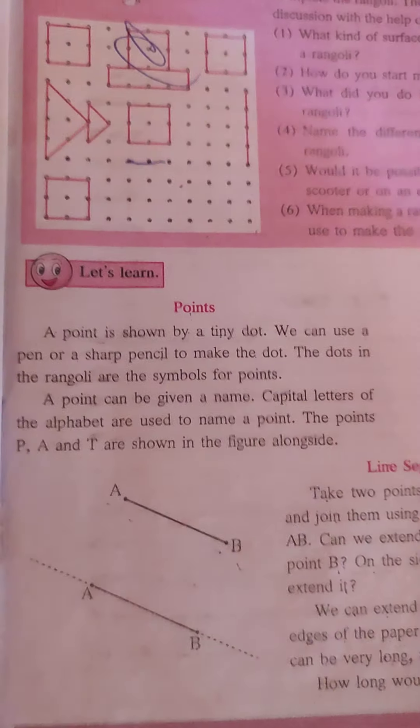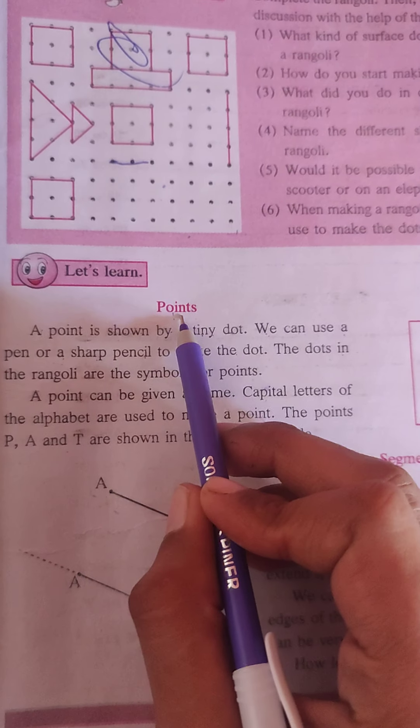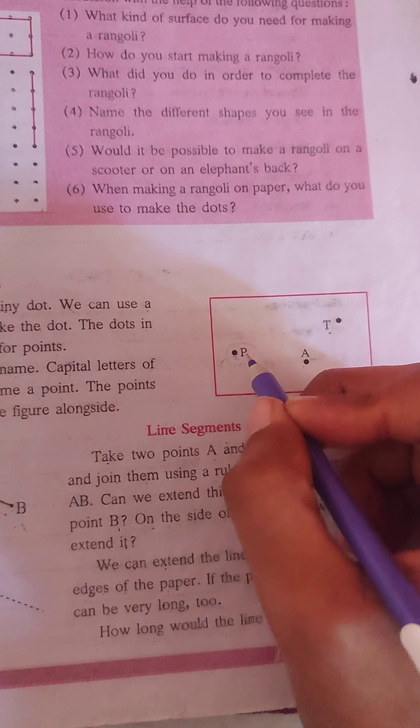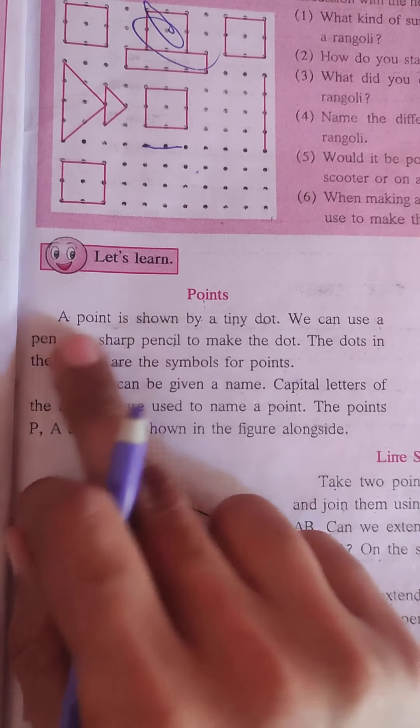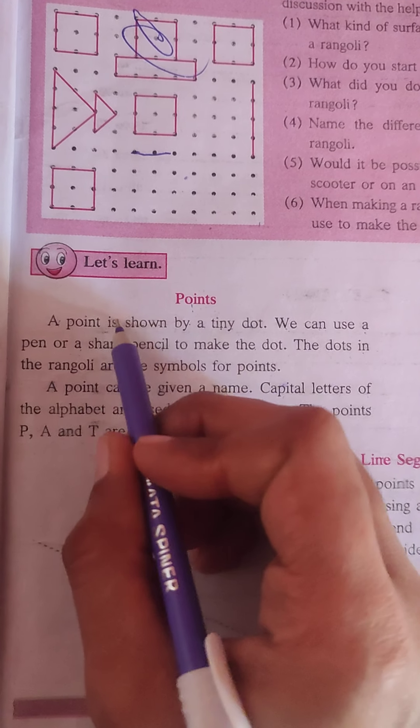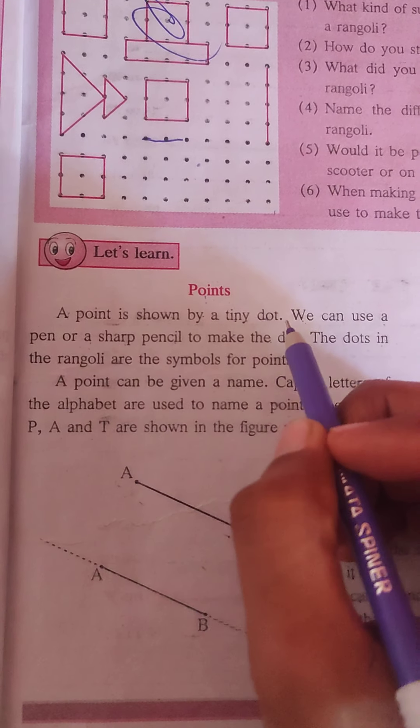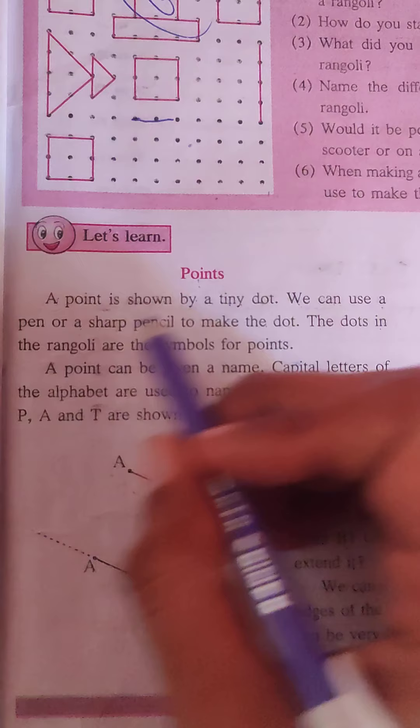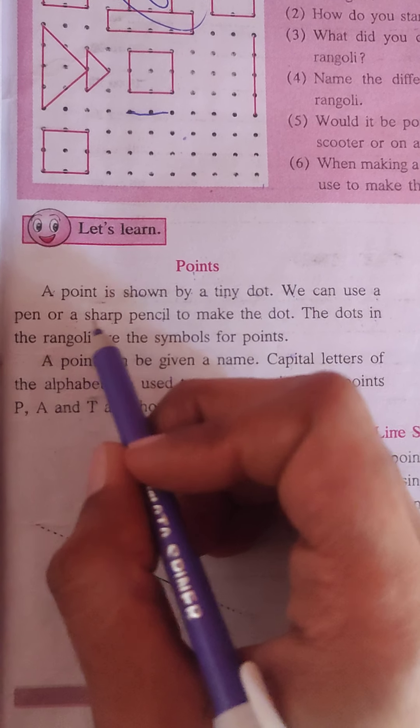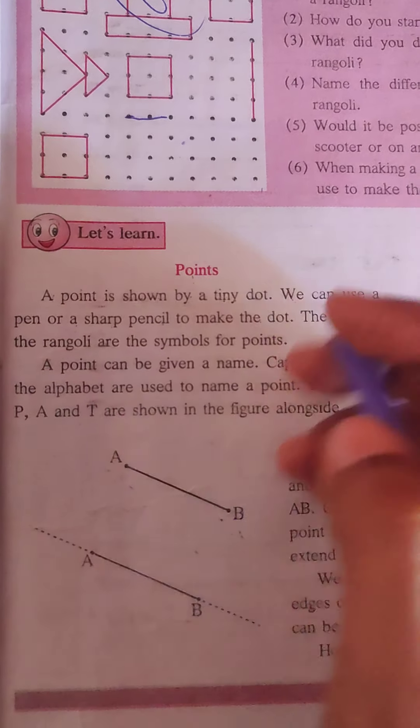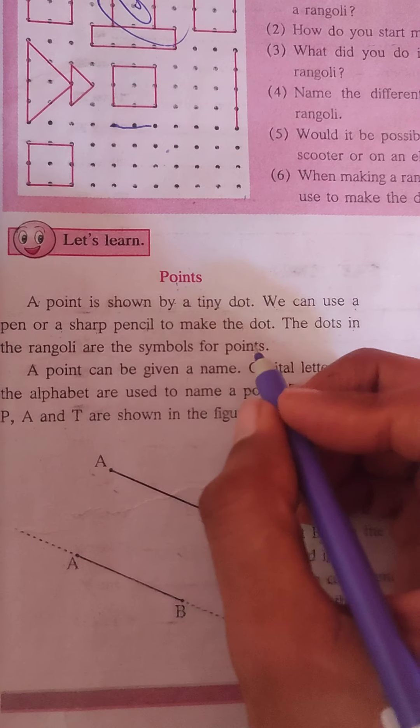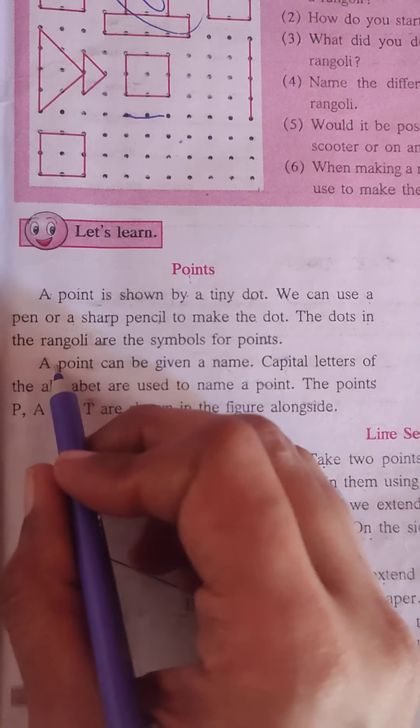Let's start first with points. Points mean, as you can see here, point P, point A, point T. Here is the definition of a point: A point is shown by a tiny dot. We can use a pen or a sharp pencil to make the dot.